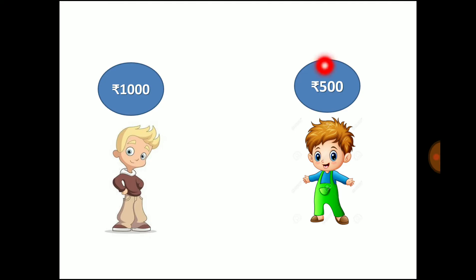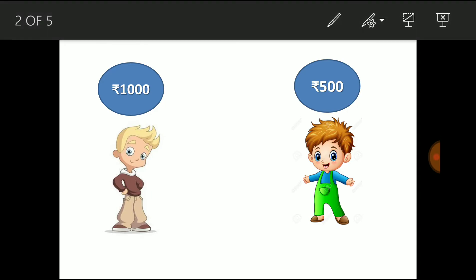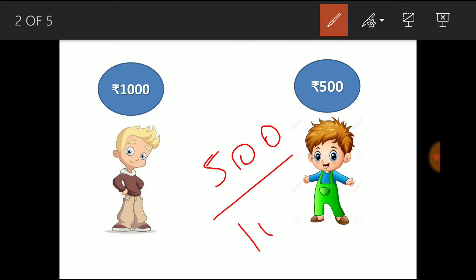So B's income is how many percentage lesser comparing to A's income? So B is getting Rs.500 lesser comparing to A. So with whom are we comparing? We are comparing with respect to A. So A's income has to come in the denominator. So you have to convert to percentage.